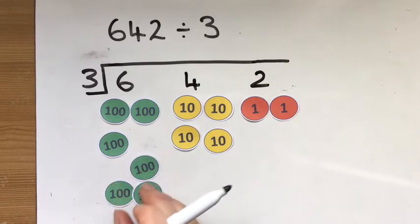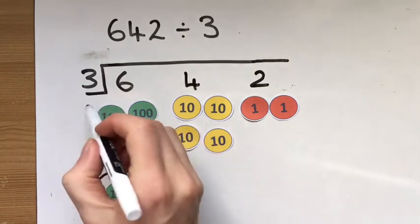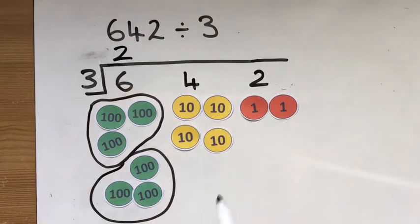So let's see how many groups I can get. Here's my 600. There's a group of 3 and here is a group of 3 as well. So I can get 2 groups of 3 there.